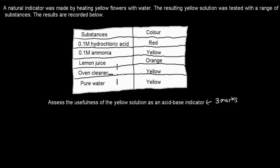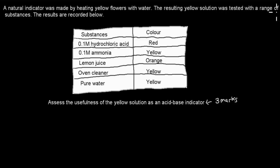So the question is: a natural indicator was made by heating yellow flowers with water. The resulting yellow solution was tested with a range of substances. The results are recorded below. Substances: 0.1 molar hydrochloric acid, 0.1 molar ammonia, lemon juice, oven cleaner, and pure water.